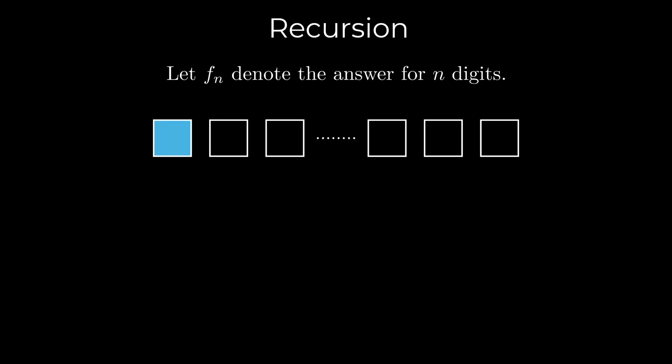There are 9 ways to do so. The first digit can be 0 or any number from 2 to 9. After choosing the first digit to be anything other than 1, the problem reduces to n minus 1 digits. So this case contributes 9 times fn minus 1 to the total.